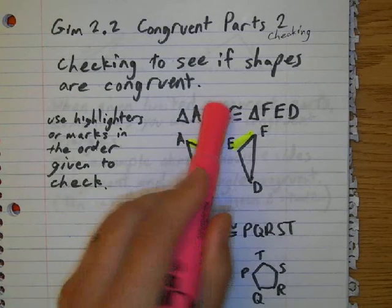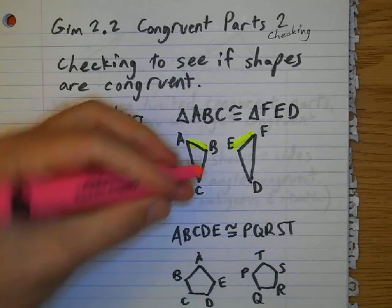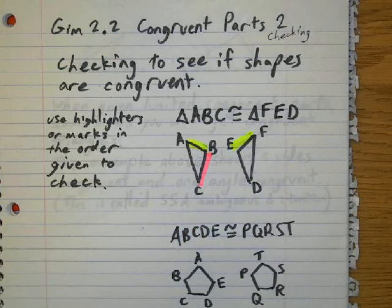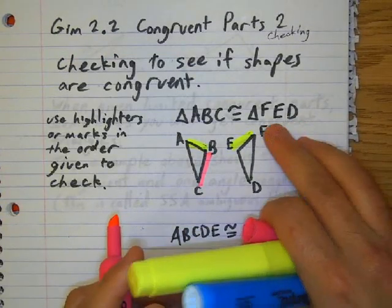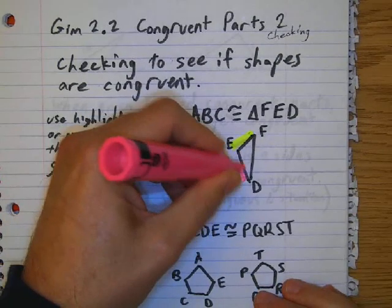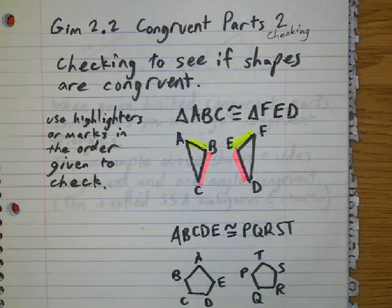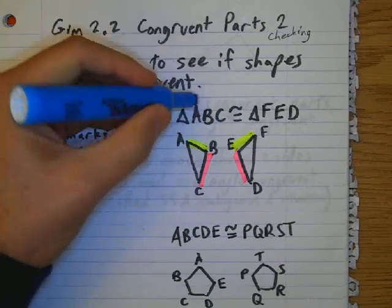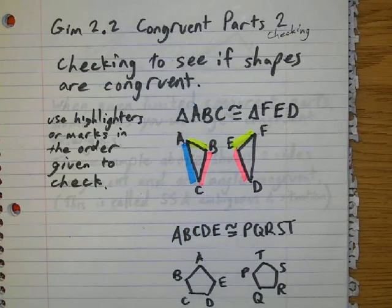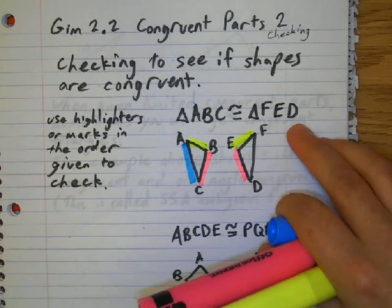BC is the second two letters, so BC is this line right here, and ED is the second two letters. ED is that one there. And then if I use the first letter and the last letter, A and C, should match up with the first letter and the last letter, F and D.